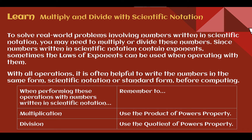Multiply and divide with scientific notation. To solve real-world problems involving numbers written in scientific notation, you may need to multiply or divide these numbers. Since numbers written in scientific notation contain exponents, the laws of exponents can be used when operating with them. With all operations, it's often helpful to write the numbers in the same form — either scientific notation or standard form — before computing. When multiplying, use the product of powers property, where you add the exponents. When dividing, use the quotient of powers property, where you subtract your exponents.